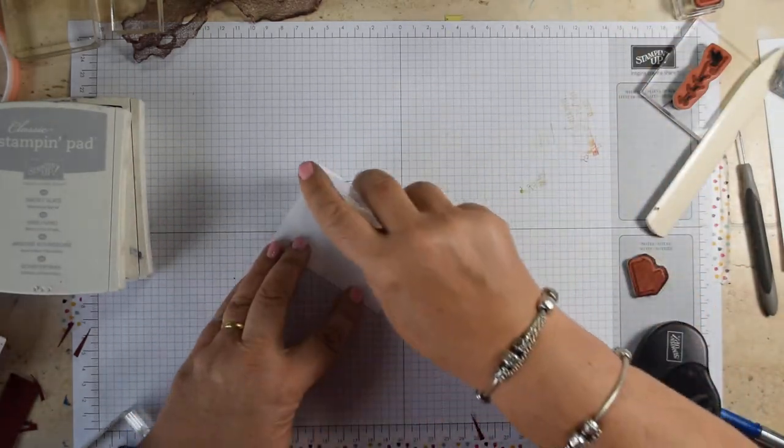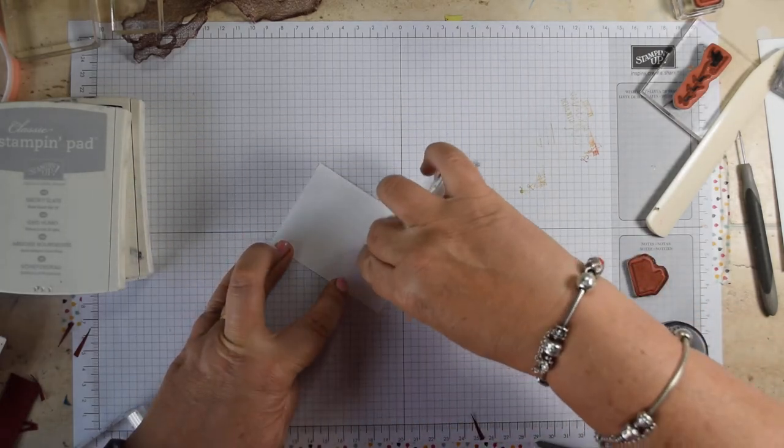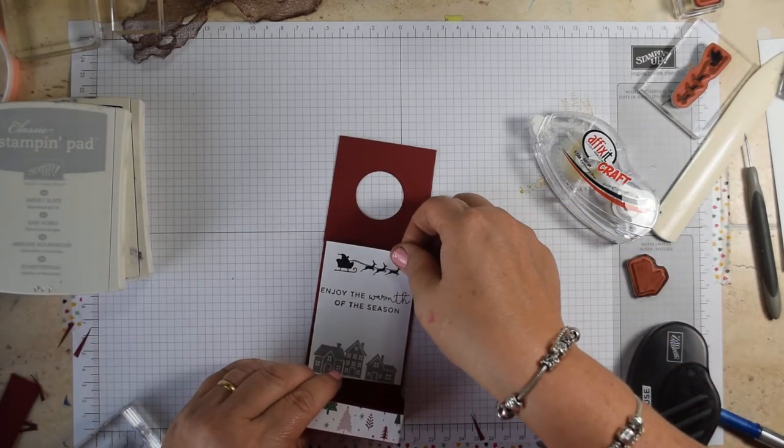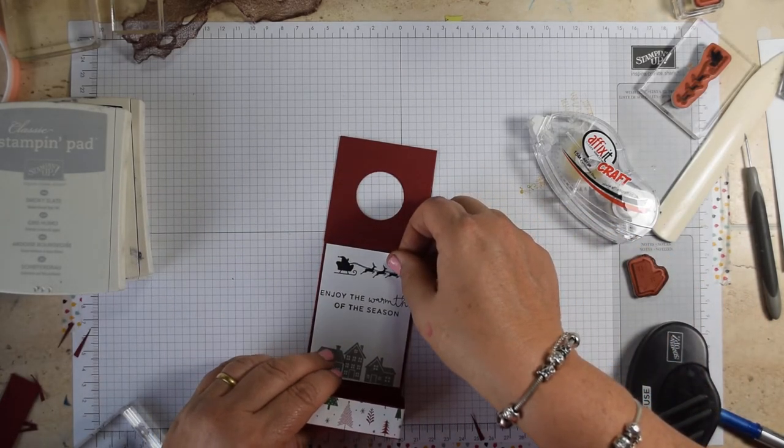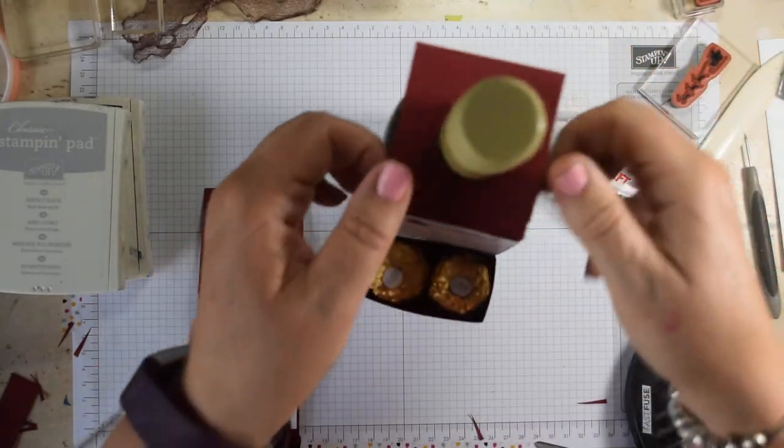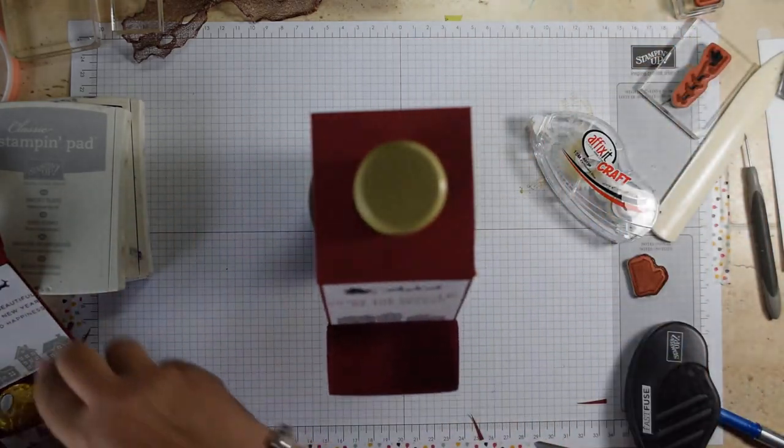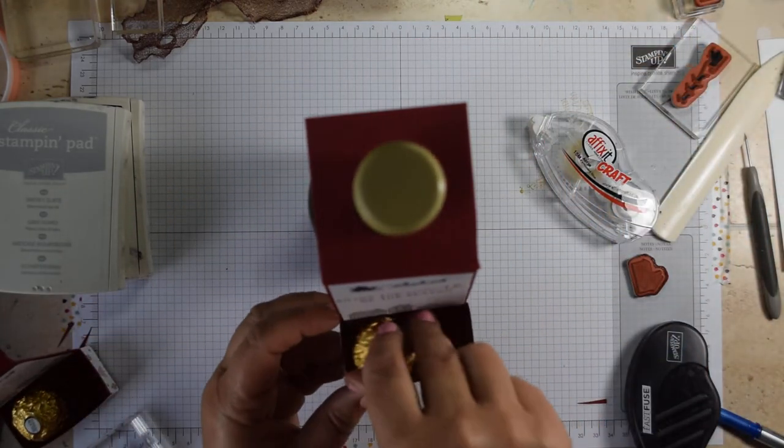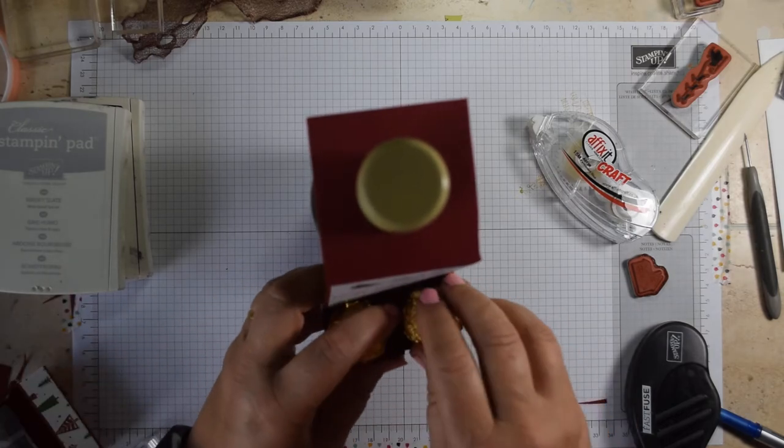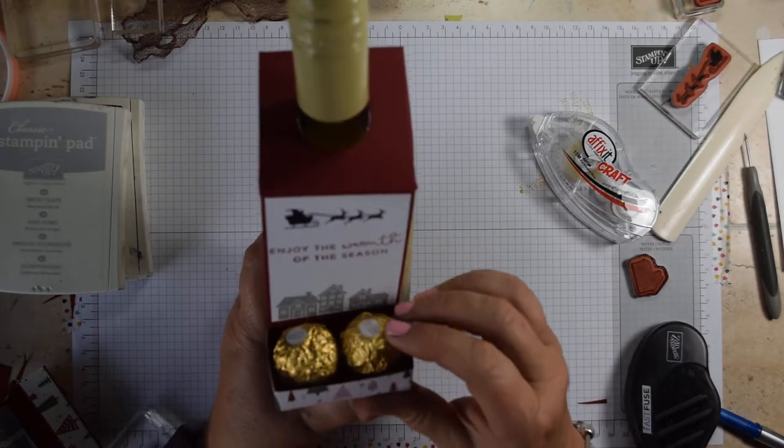And then all you need to do is then attach that to the section here. It literally just sits in the middle there. And then all you need to do is, as I've done here, pop that over your bottle of wine. And those two Ferrero Rocher fit just nice and snugly in there. And there you have a Ferrero Rocher holder.